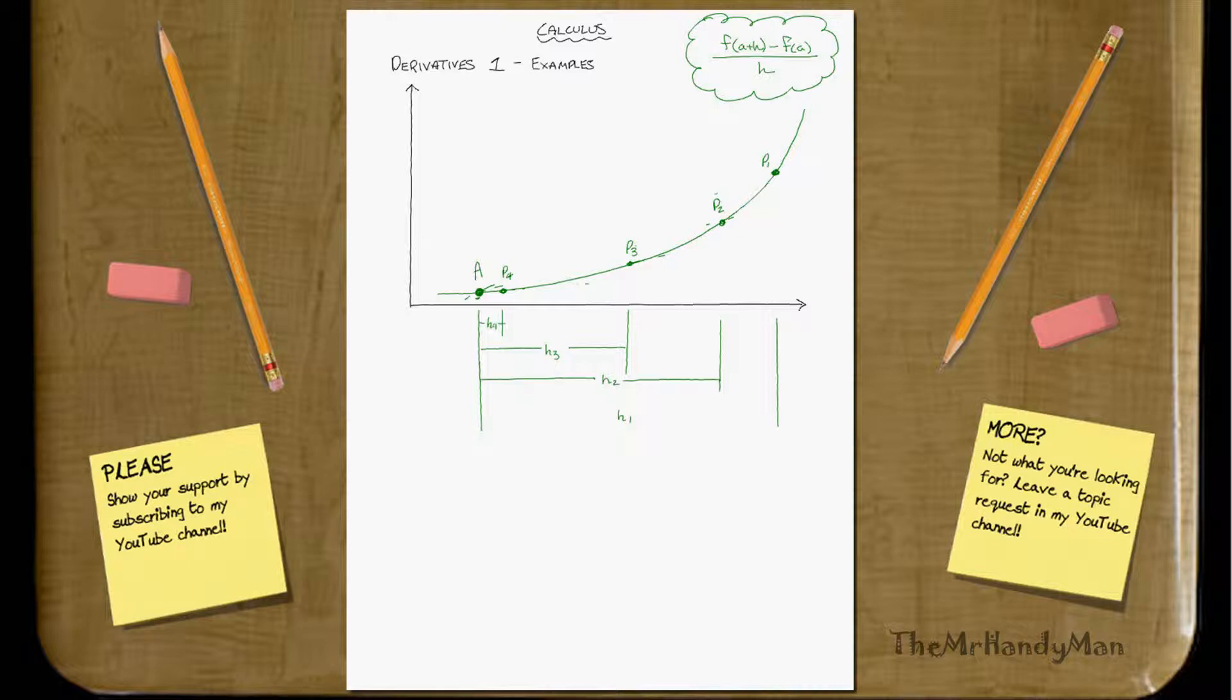Excuse me while I draw this up for you. So as you can see, h1 is the largest. Then it goes h2, h3, and then finally a really small one, h4.